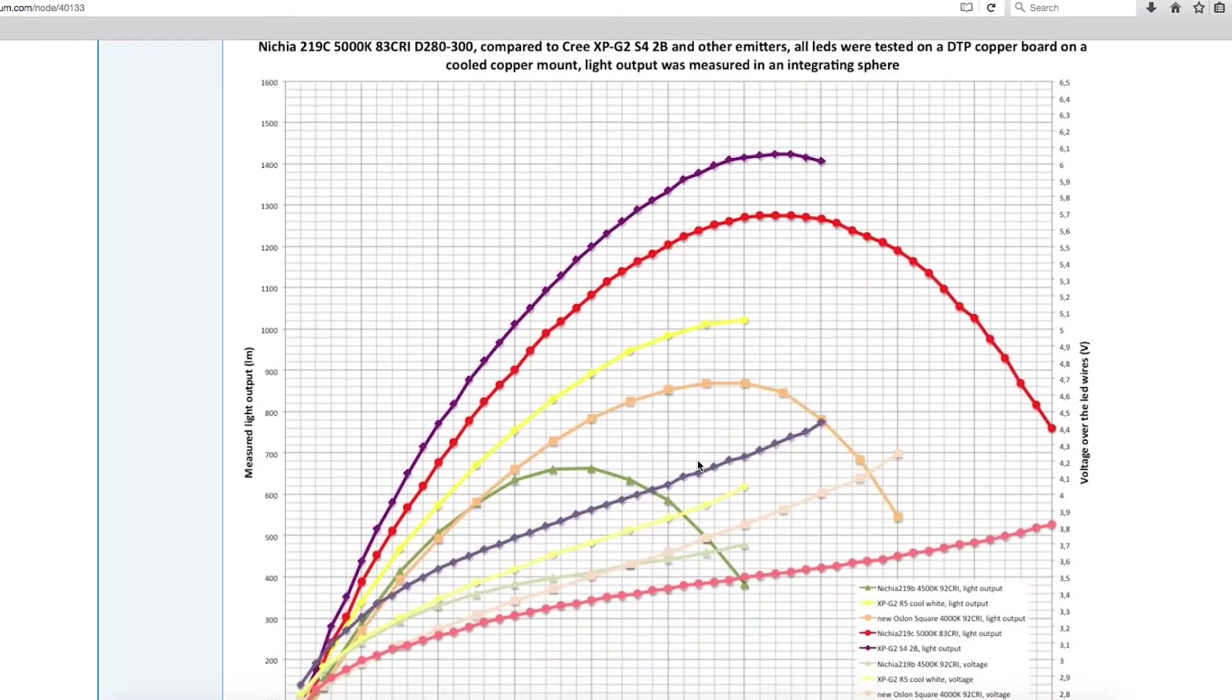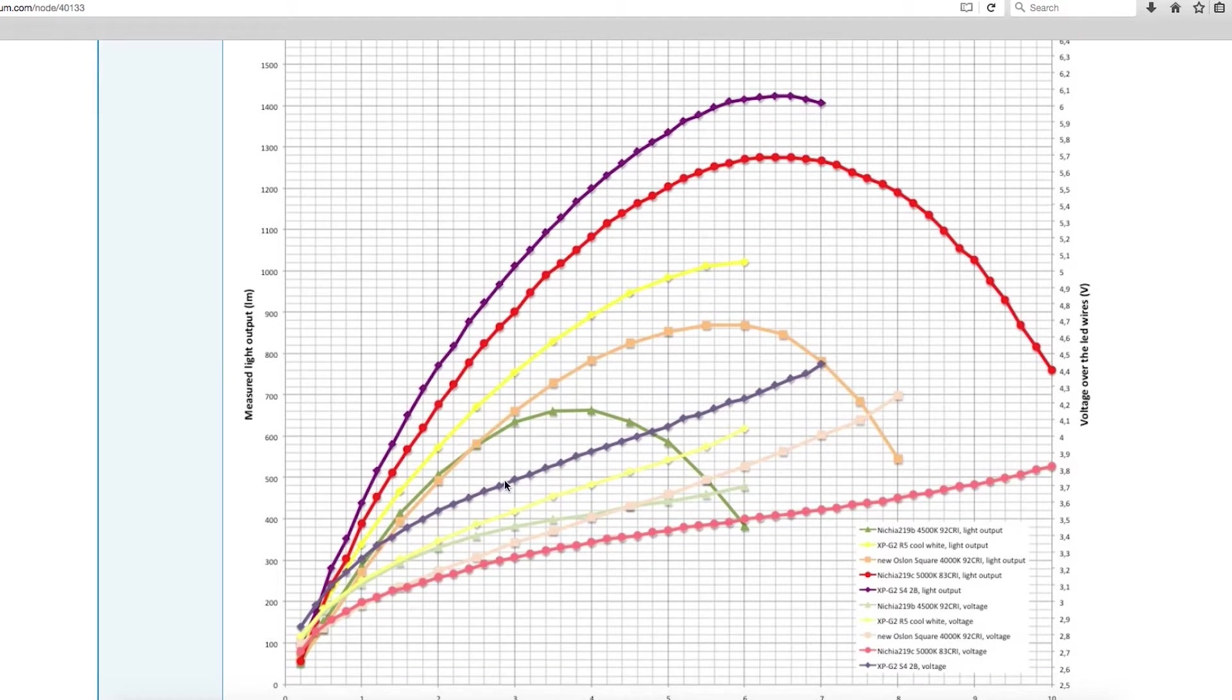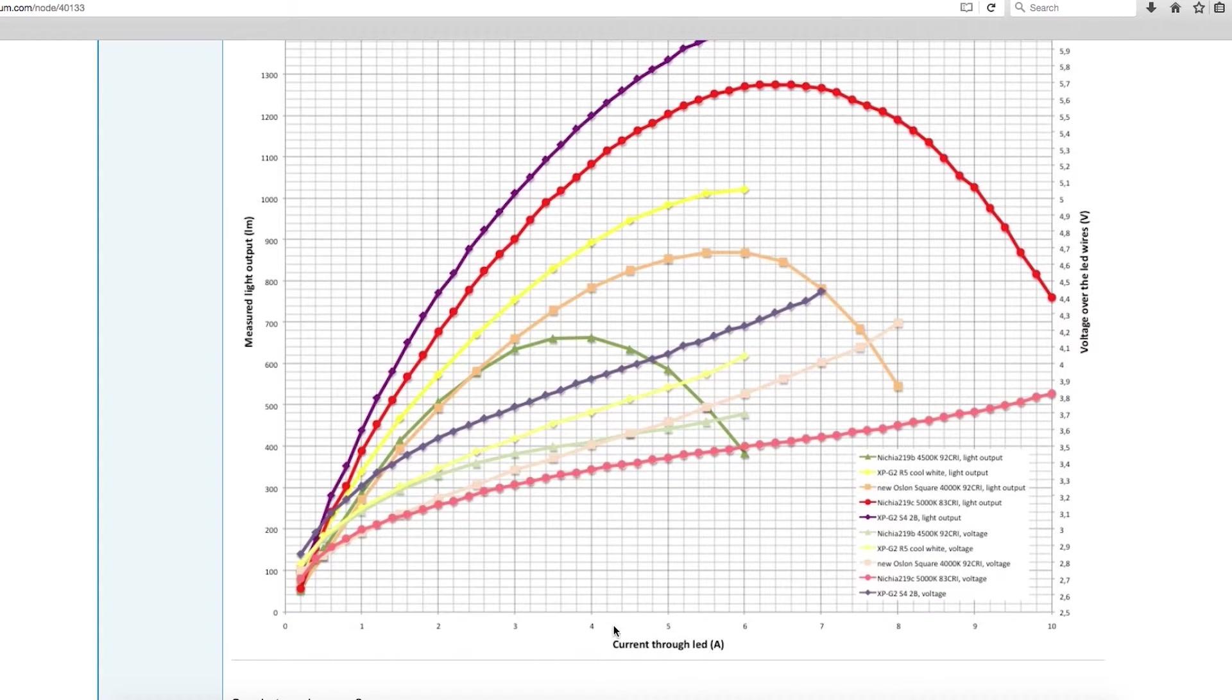So if we go down here to the graph, we have a number of different LEDs represented by different color lines. On the x-axis we have current, and on the y-axis we have lumens.